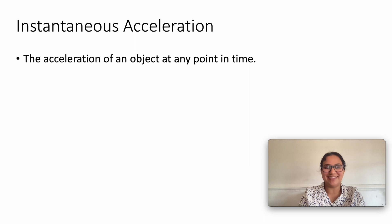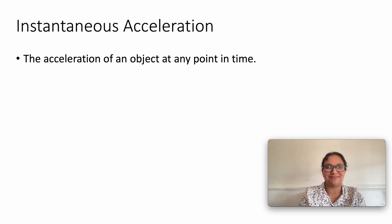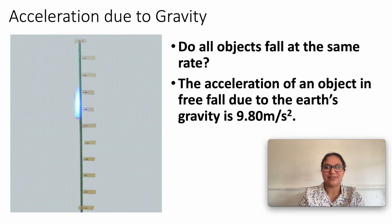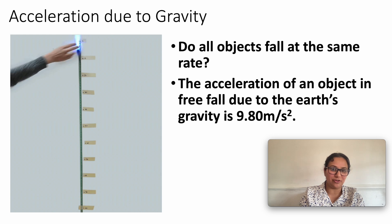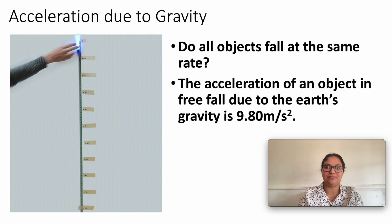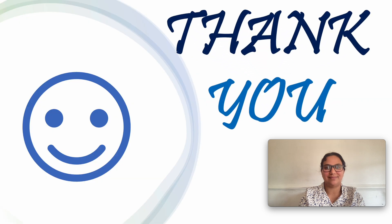Instantaneous acceleration is the acceleration of an object at any given point in time. Next, acceleration due to gravity: the acceleration of an object in free fall is about 9.8 meters per second square, which is due to Earth's gravitational field. Thank you.